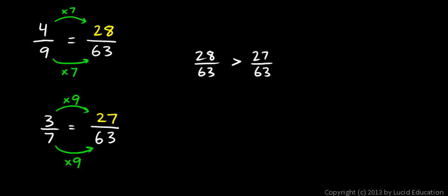So 28 over 63, that's equal to 4 ninths. So that right there is equal to 4 ninths. And 27 over 63 is equal to 3 sevenths. So this fraction is 3 sevenths. So we can then conclude that 4 ninths is greater than 3 sevenths. And we found that by writing both fractions with the same denominator.